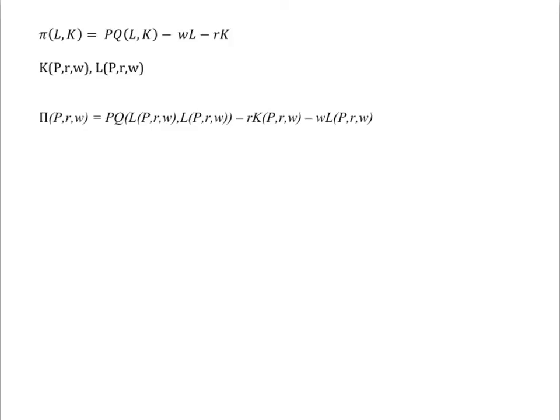That is, the derivative of the profit function with respect to P is just Q. Similarly, the derivative of the profit function with respect to R is the negative of K. And the partial derivative of the profit function with respect to W is equal to negative L. So profits are increasing in P, profits are decreasing in input prices.